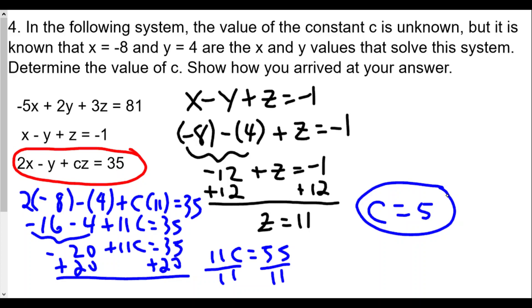The strategy was: plug the known values of x and y into either the first or second equation to solve for z, then use all three values — x, y, and z — to plug into the last equation to find the missing value of c.